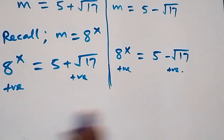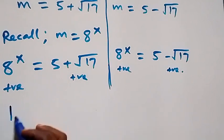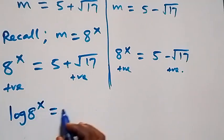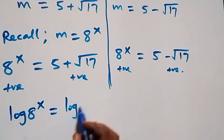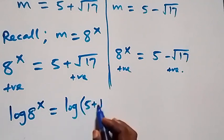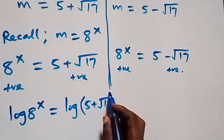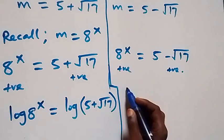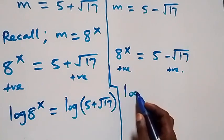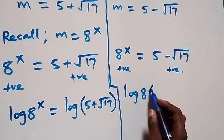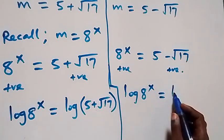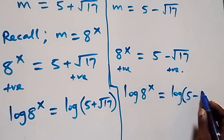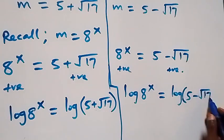We can take the log on both sides: log of 8 raised to power x equals to log of (5 plus root 17). Similarly, taking the log on both sides of the second equation: log of 8 raised to power x equals to log of (5 minus root 17).